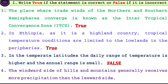The windward side of hills and mountains generally receives more precipitation than the leeward side. The windward side receives more precipitation.